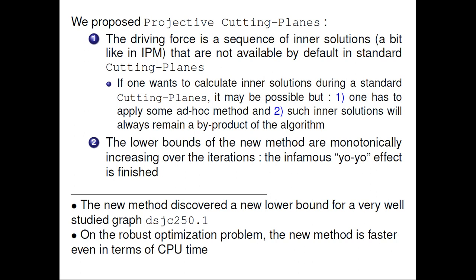So we needed to stop both methods after a certain amount of time. But the Lagrangian bounds in column generation are quite weak, where the new lower bounds discovered using these interior points are much stronger. And regarding all the other experiments we performed on different problems, we may say that on the robust optimization problem, the proposed method is not only faster in terms of iterations, like in graph coloring, but it's also faster in CPU time, mostly because the projection subproblem in the robust optimization is easier in terms of computation speed. Thanks for watching!